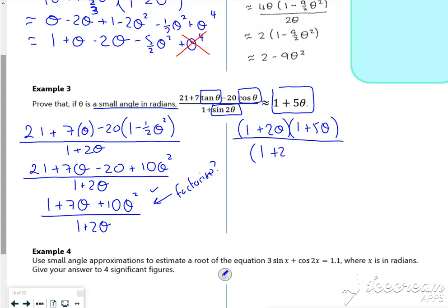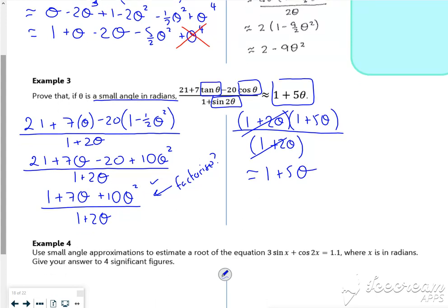I've got a 1 plus 2θ here. Get rid of that. I've got a 1 plus 5θ. That's the answer. I am so sorry that the bits aren't running. Right, let's keep going then.